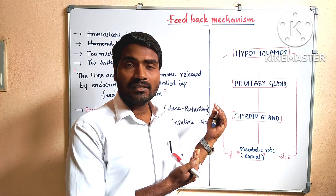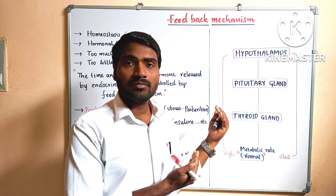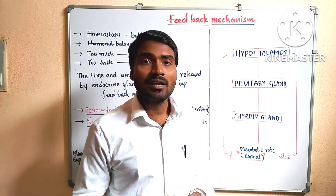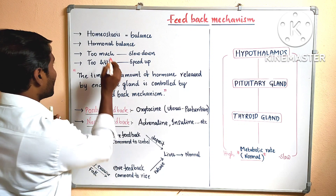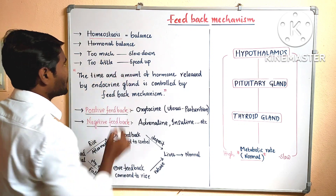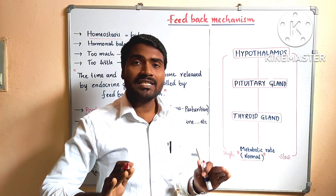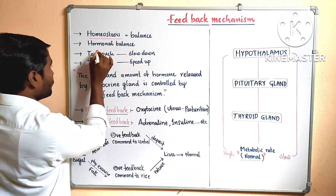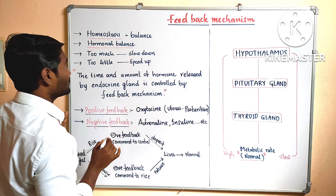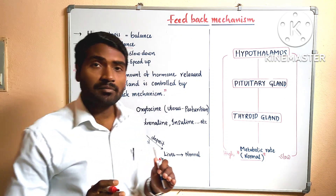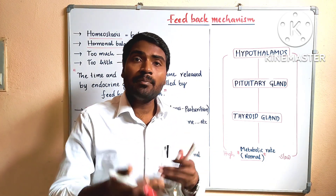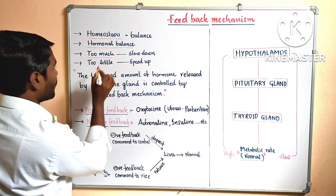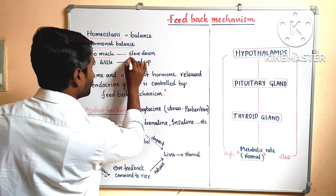As per the lesson, it is the topic of the endocrine system, endocrine glands, hormonal balance — maintaining hormonal balance. Maintenance of body balance is called homeostasis. Sometimes a gland will be hyperactive to produce more hormone. If there is too much secretion of the hormone, it should slow down.